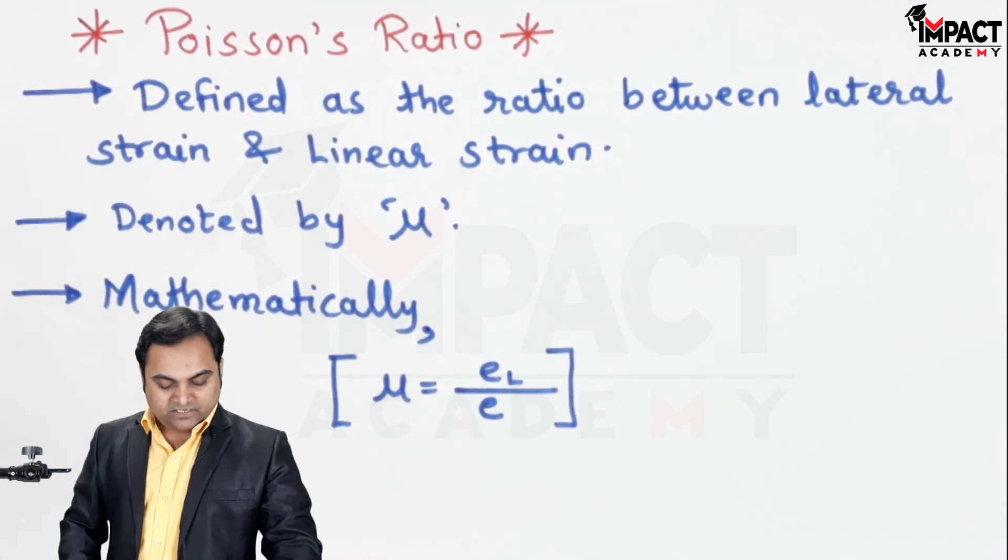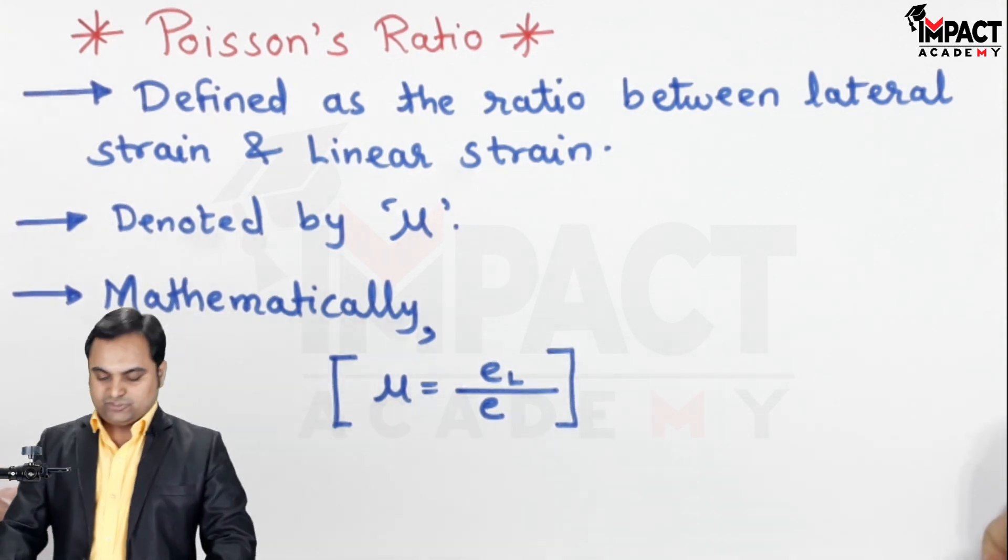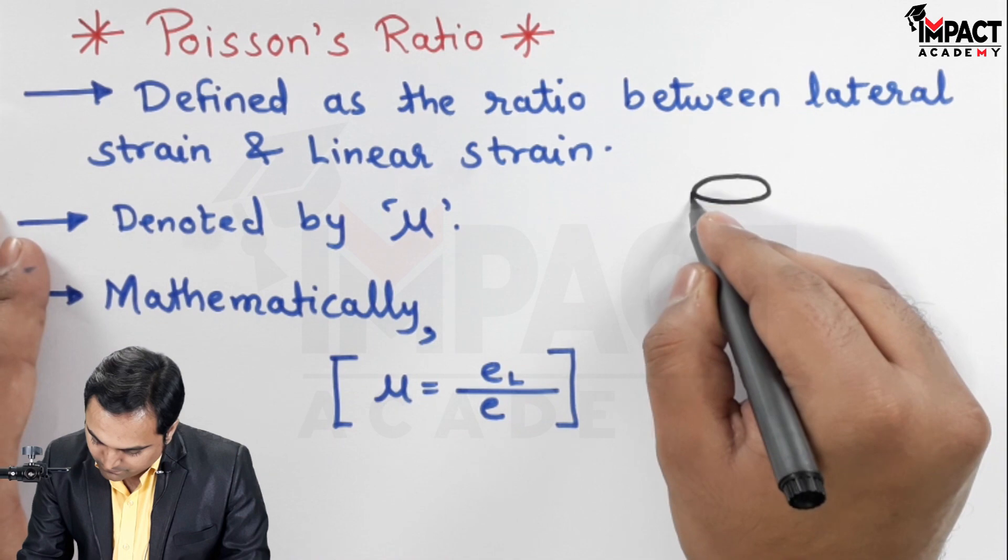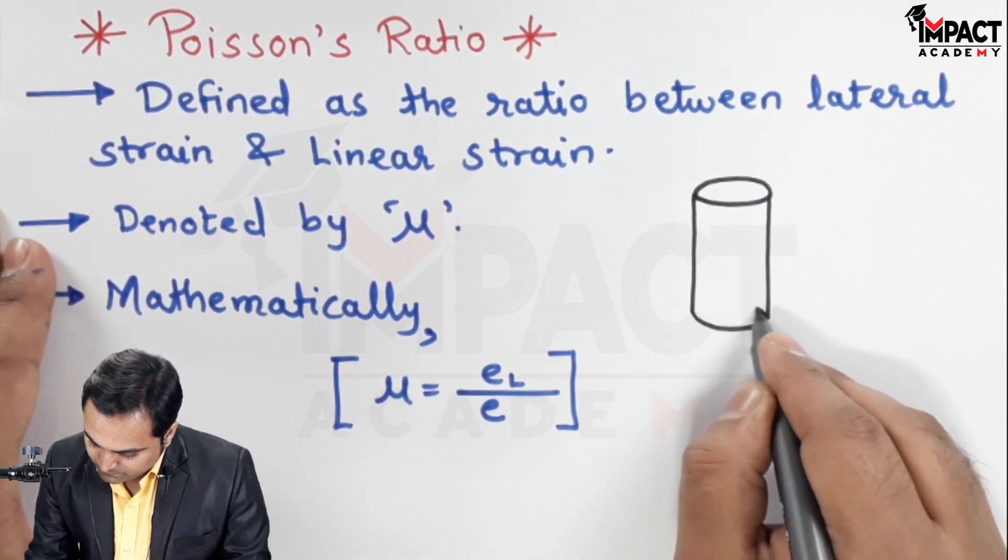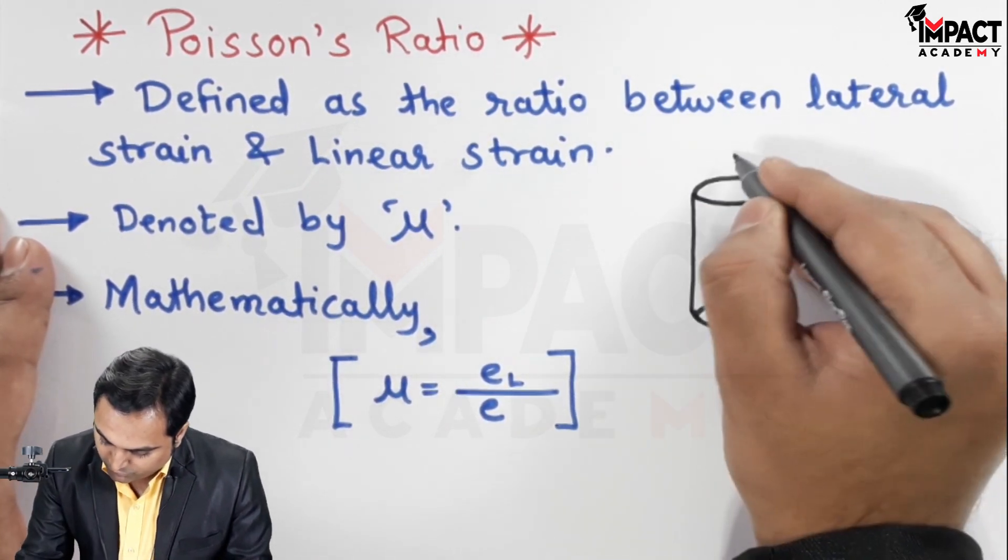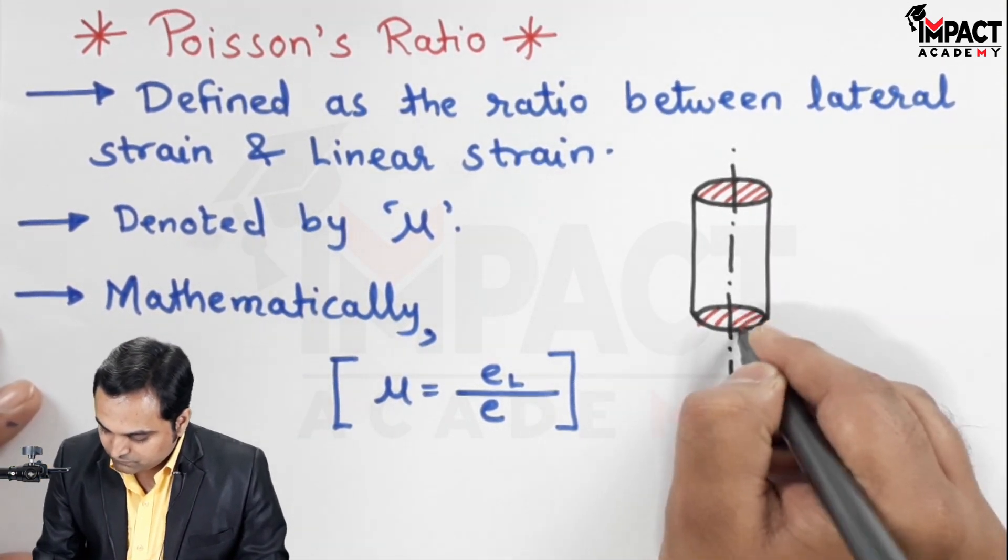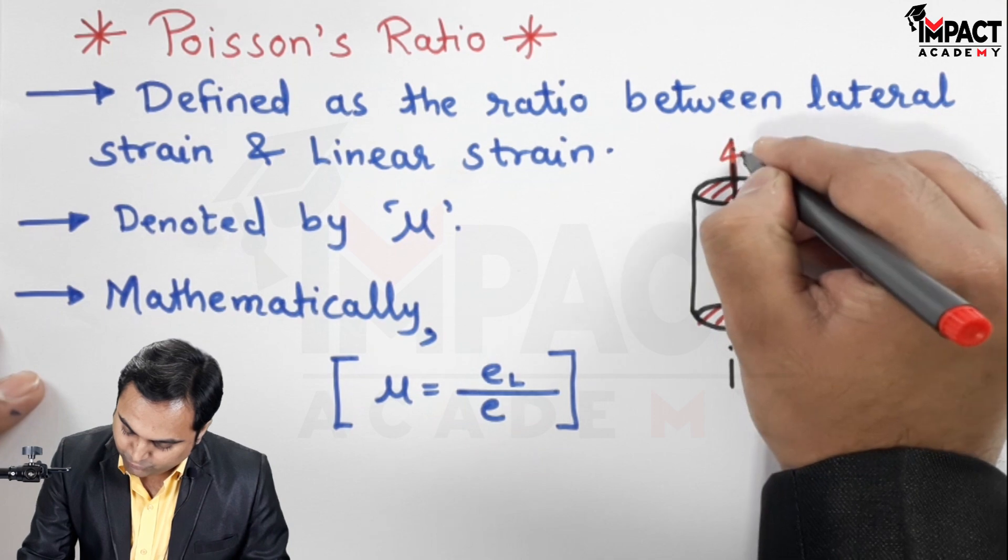Now to explain lateral and linear strain, I'll just draw a diagram here. There is a uniform rod subjected to pull.